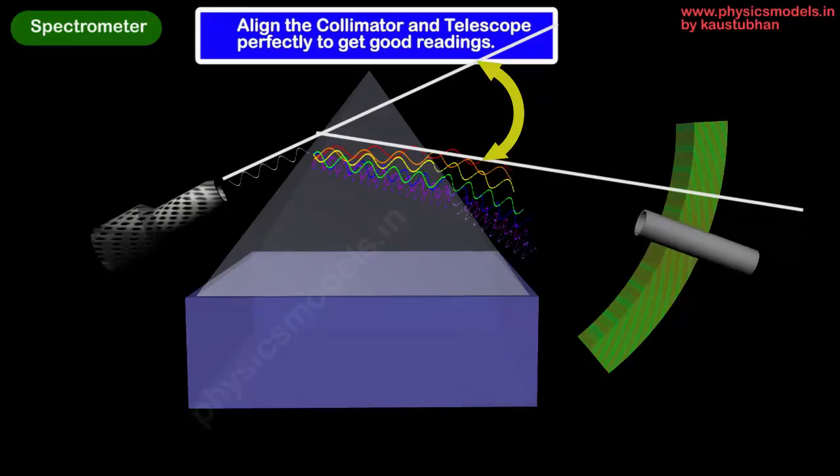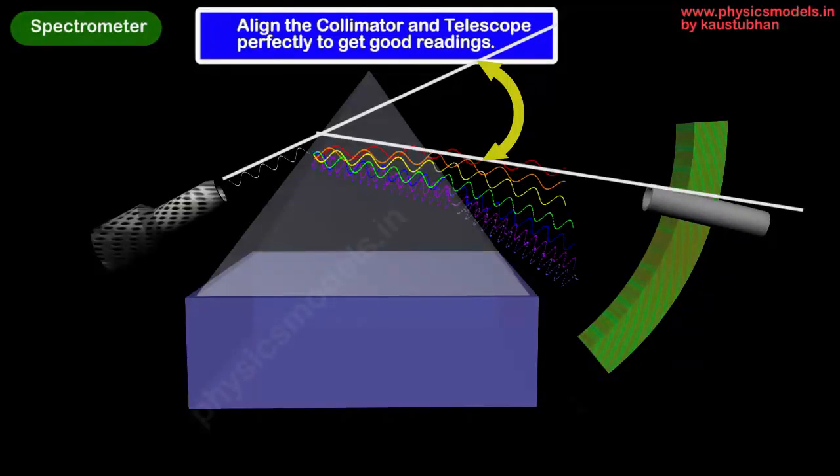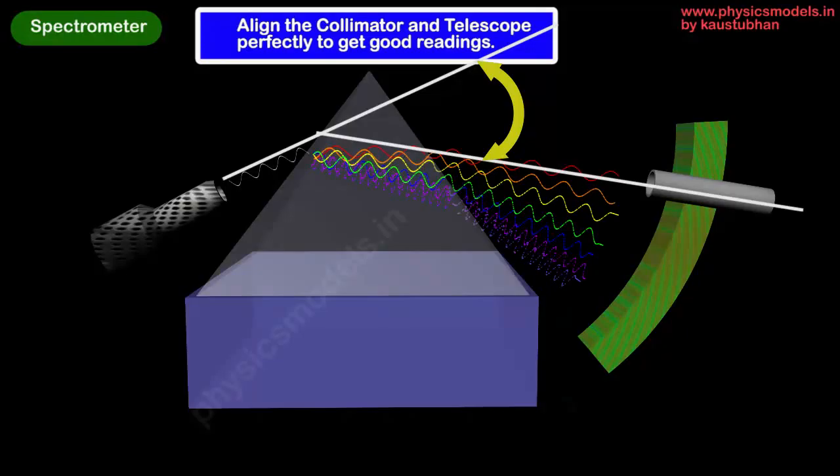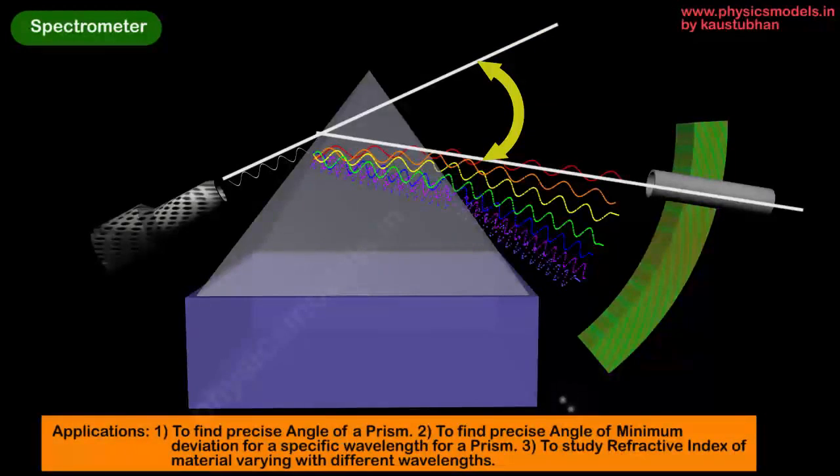If you want to measure the angle of deviation, which is the bending of the refracted rays of light with respect to the original ray of light, this is how you do it. The white light came in at a particular angle and the red wavelength got refracted at another angle.